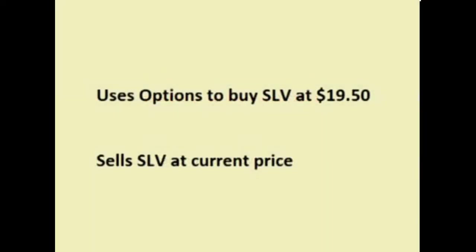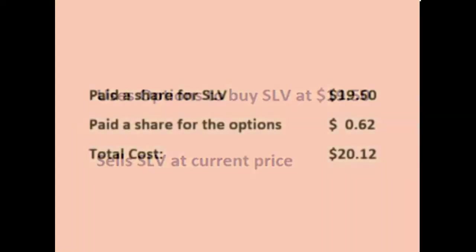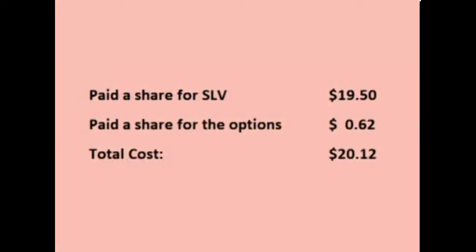If the price of SLV climbs to $20.12 or above, the trader uses his options to buy SLV at $19.50, then sells it for the current price of $20.12 or above. He paid $19.50 for SLV and $0.62 up front to buy the options, so his total cost is $20.12 a share. If he sells SLV above $20.12, the difference is his profit.